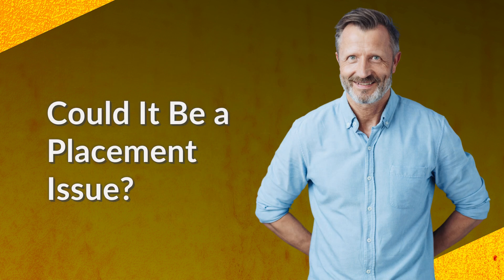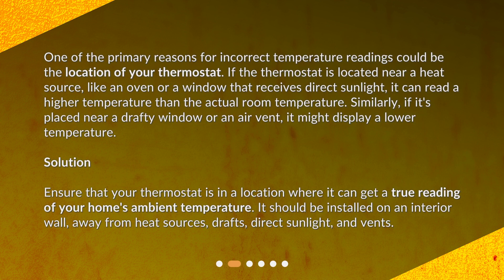Could it be a placement issue? One of the primary reasons for incorrect temperature readings could be the location of your thermostat. If the thermostat is located near a heat source, like an oven or a window that receives direct sunlight, it can read a higher temperature than the actual room temperature. Similarly, if it's placed near a drafty window or an air vent, it might display a lower temperature. Solution: ensure that your thermostat is in a location where it can get a true reading of your home's ambient temperature. It should be installed on an interior wall, away from heat sources, drafts, direct sunlight, and vents.